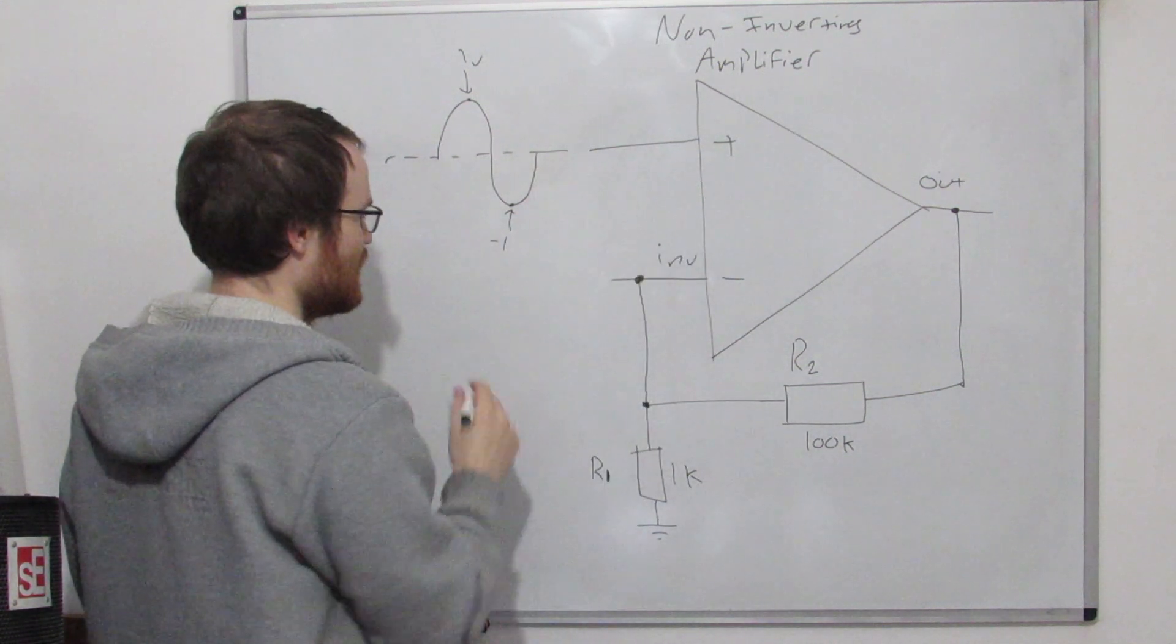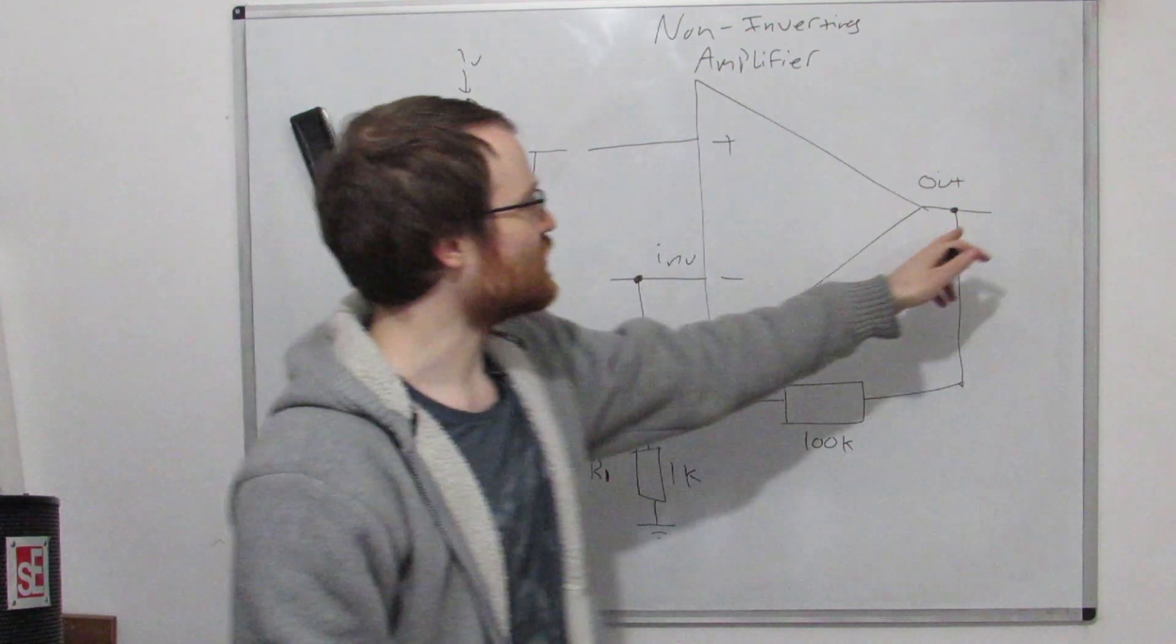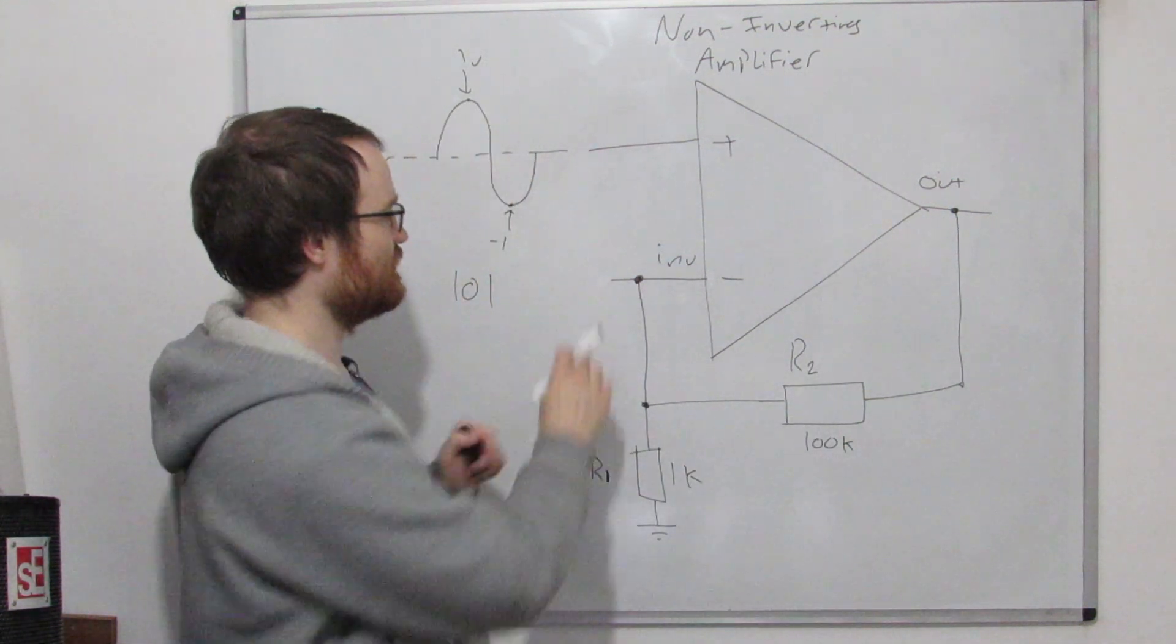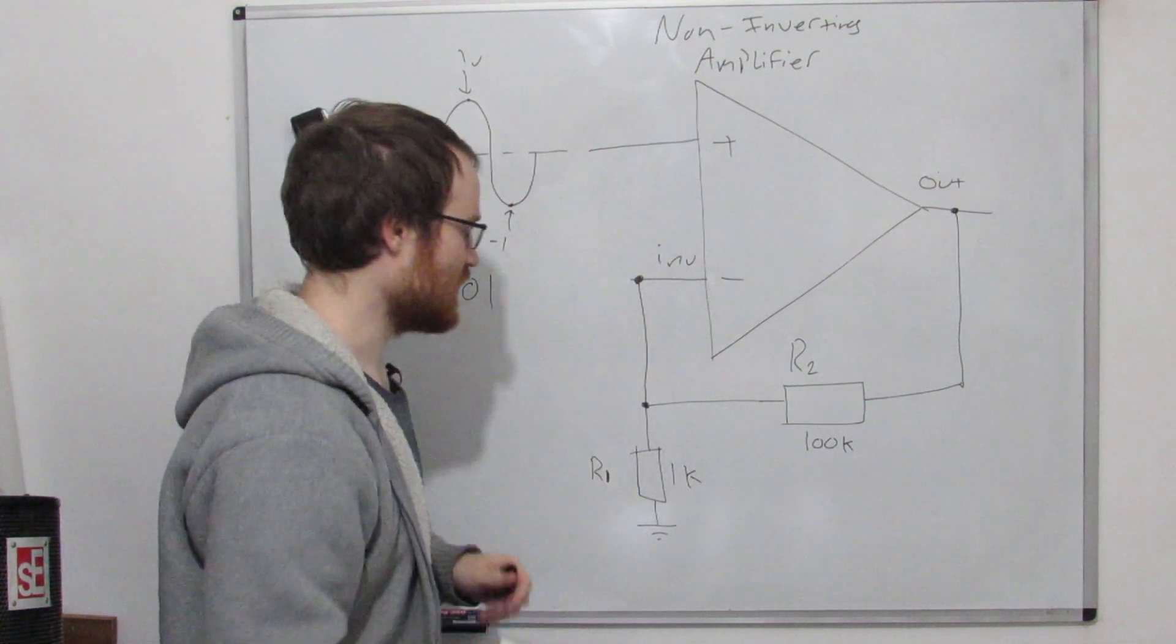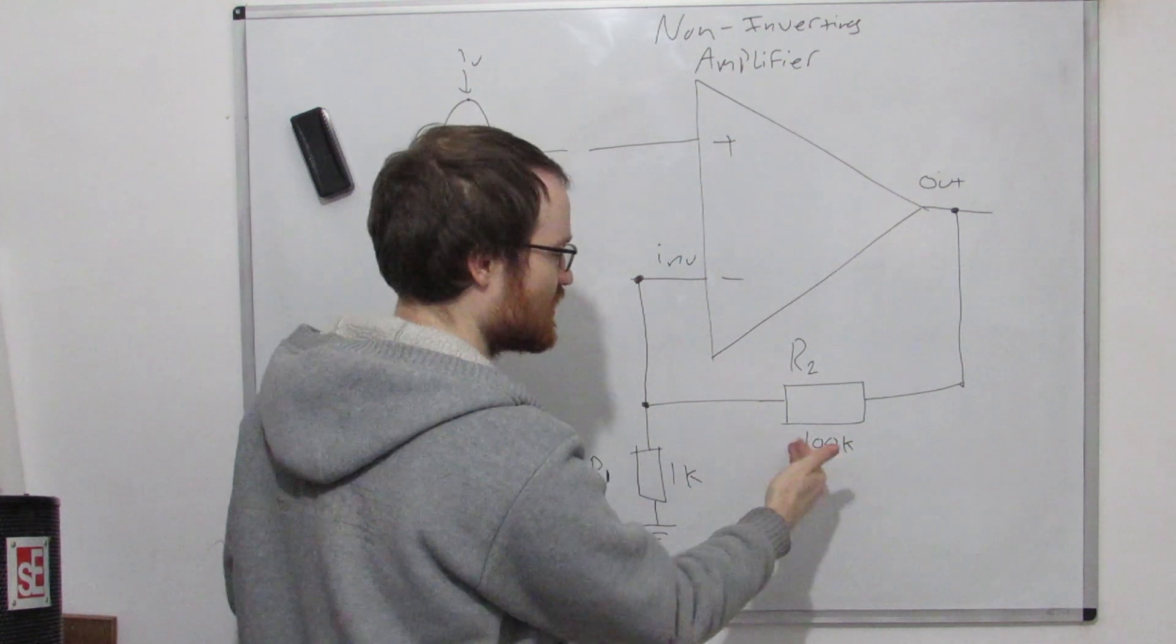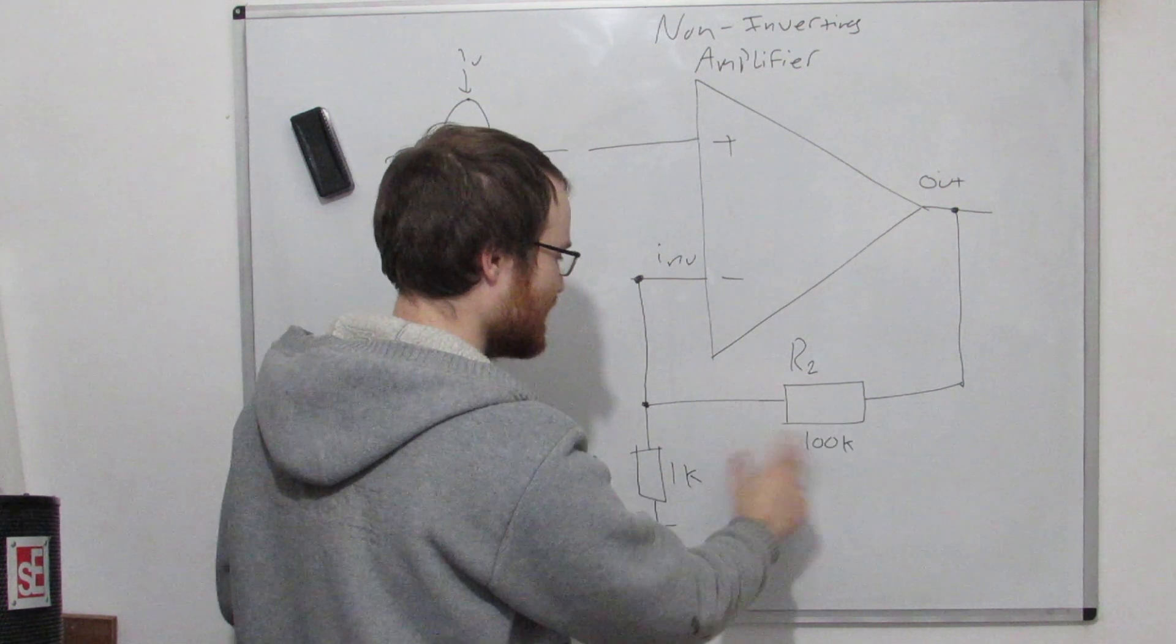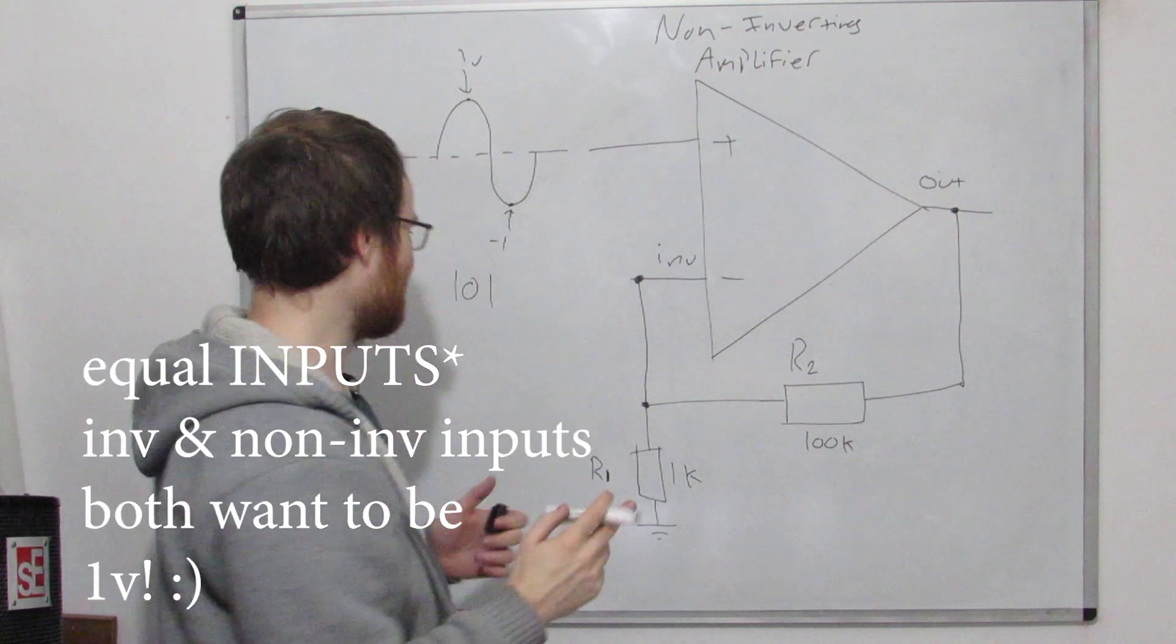because there's a 100 to 1 ratio here, so there's going to be 100 times more voltage dropped across this one than this one, so we need 101 to get that equal split.